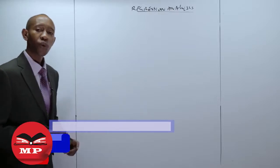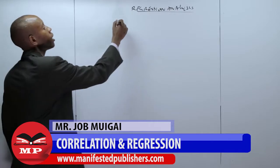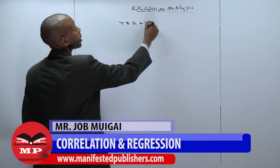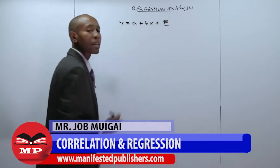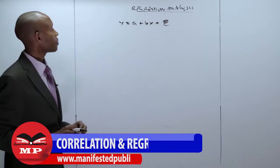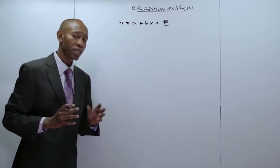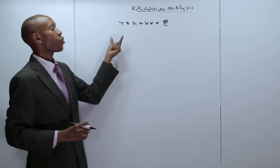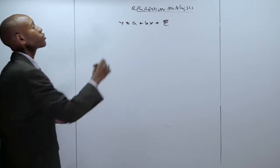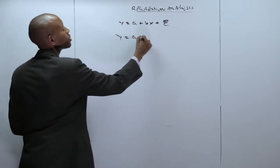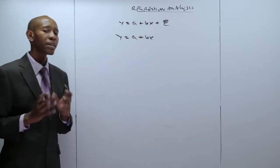The linear regression equation takes the form y is equal to a plus bx plus the error term. However, for computation purposes, the equation is reduced to y is equal to a plus bx.